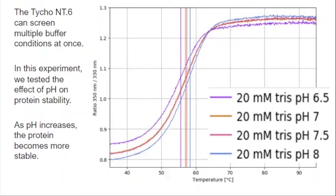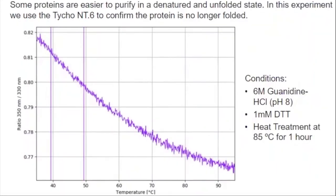Some other applications of the TYCO are actually in the opposite direction. Sometimes we purify proteins that are either insoluble or improperly folded, and it can be beneficial to denature those proteins and purify them in their unfolded state. In this experiment, I resuspended a pellet in 6 molar guanidine hydrochloride at pH 8 and 1 millimolar DTT, then heated those proteins at 85 degrees Celsius for an hour. Taking a sample and running it on the TYCO, there's no longer any evidence of a transition — the trace just goes straight down. There's no longer any folding, confirming that our denaturing and heat treatment steps were successful.